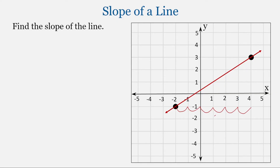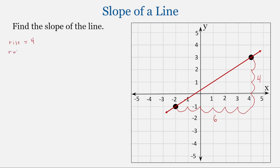So the run is 6. And from the intersection of my horizontal and vertical lines, I'm going to count upward until I get to the second point: 1, 2, 3, 4. So this value is 4. I have a rise equal to 4 and a run equal to 6. Slope equals rise over run, so this is 4 over 6, which simplifies to 2 thirds. The slope of this line is 2 thirds.